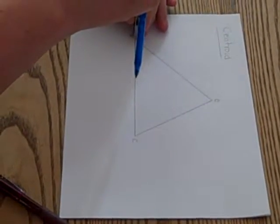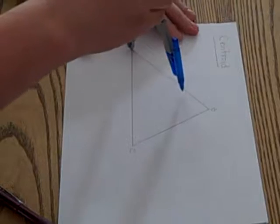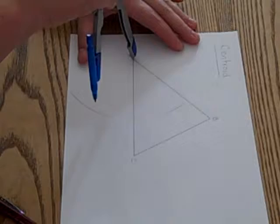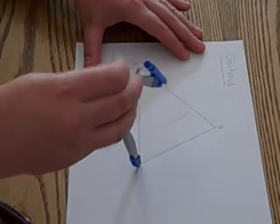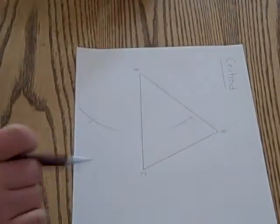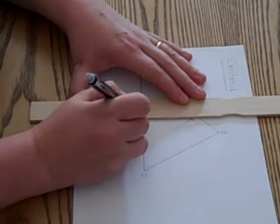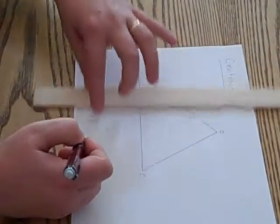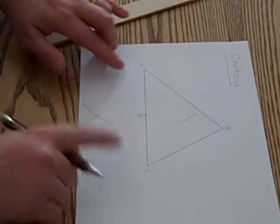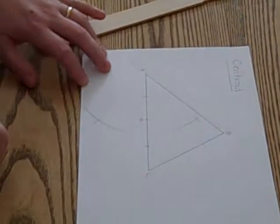To find the midpoint, I'm going to set my compass a little more than halfway. And I'm going to draw an arc above and below the segment from vertex A. I'm going to do the same thing from vertex C. This allows me to find the midpoint of segment AC. Now I'm just going to notch in that midpoint. So I know point D is the midpoint of segment AC and that segment AD is congruent to segment DC.